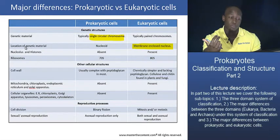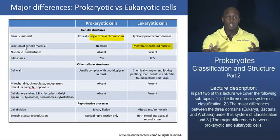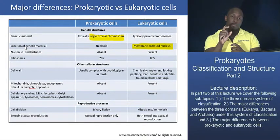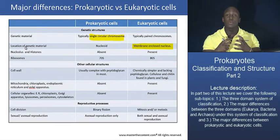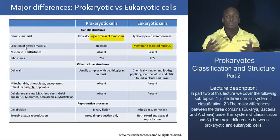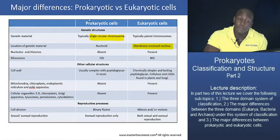A histone protein is a positively charged, basic protein that associates with and binds to DNA, which is negatively charged. It forms small units called nucleosomes. Nucleosomes are the basic units of DNA organization — histone proteins cause DNA to condense into these nucleosome structures, making it much easier to pack DNA together. These are two structures serving very important cellular functions, and we will only find them in eukaryotes, not in prokaryotes.